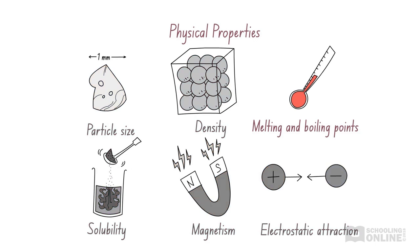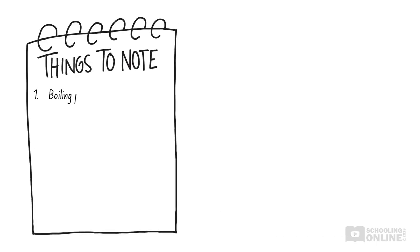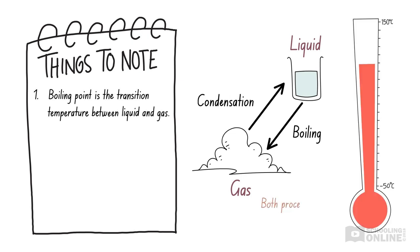In this lesson, we will focus on separation techniques that rely on differences in boiling point. Remember, boiling point is the transition temperature between liquid and gas. When you heat a liquid to its boiling point, it will boil and turn into a gas. Meanwhile, if you cool a gas to its boiling point, it will condense into a liquid.